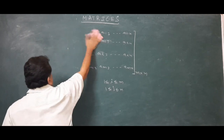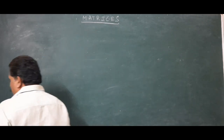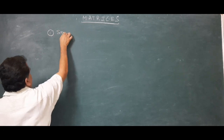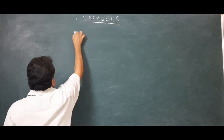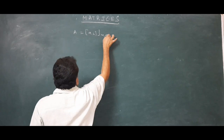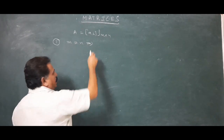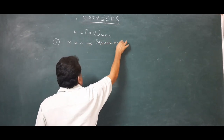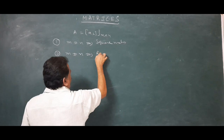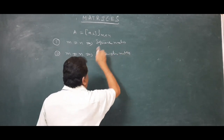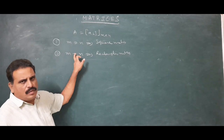Now we discuss different types of matrices. First: Square matrix. A matrix A = [aij] of order M by N is called a square matrix if M equals N — that is, the number of rows equals the number of columns. If M is not equal to N, it is called a rectangular matrix.